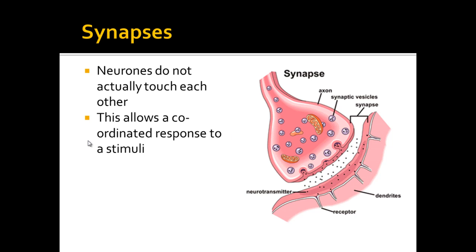This allows a coordinated response to a stimulus. If we use the example of you maybe doing a bicep curl — bringing your arm up from a right angle position towards your shoulder — you only want certain muscle fibres contracting, the ones that bring your arm upwards. You wouldn't want the muscle cells controlling the tricep, which move the arm down, to contract at the same time. Synapses and gaps between neurons mean that certain muscle fibres or effectors can be stimulated and others won't be.